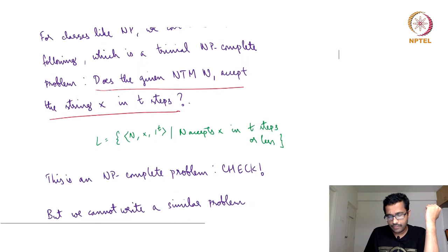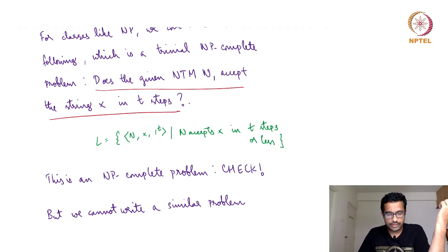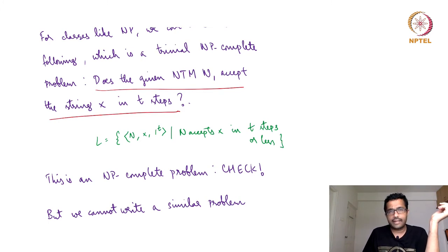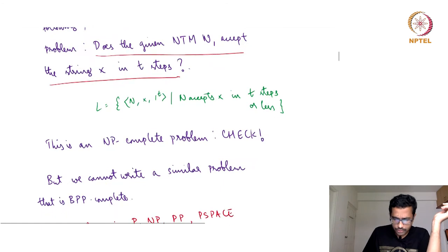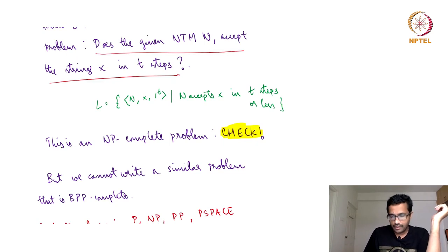Basically, any NP language you can reduce to this. If you wanted to decide if x is in some language A, and A is an NP language, then you take the non-deterministic Turing machine N_A that corresponds to A and input N_A and x in polynomial time and ask whether it accepts. I leave it to you to check that this is indeed NP-complete — the approach is straightforward and I have almost told you how to prove it.